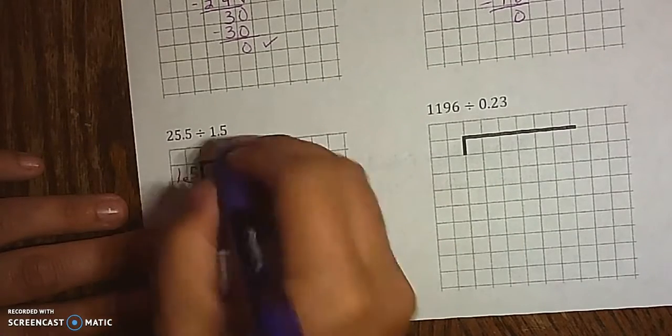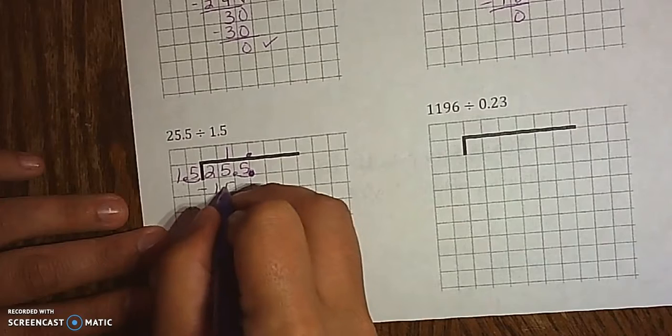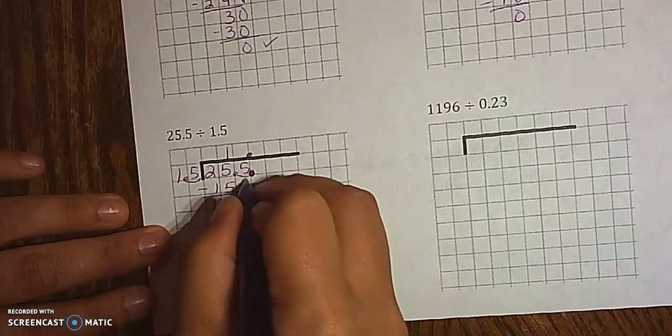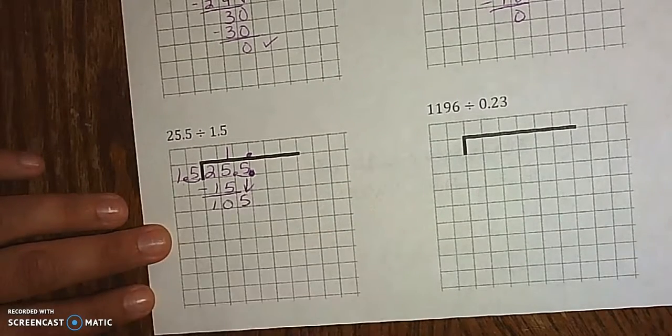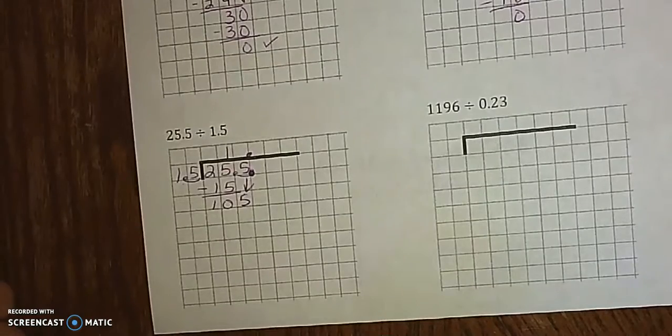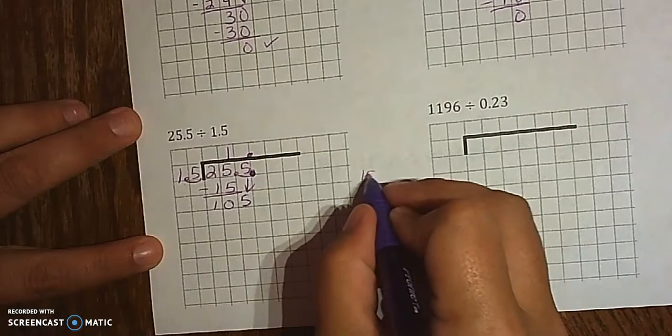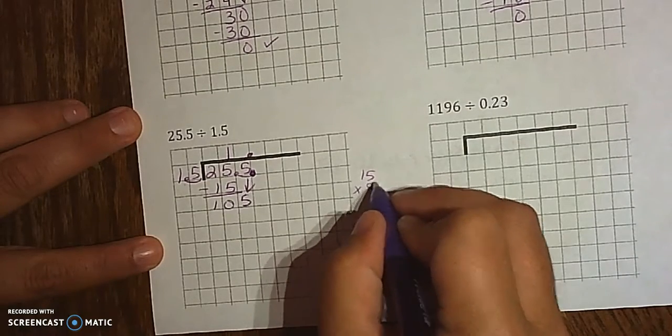15 goes into 25 once, with 10 left over. 15 goes into 105. Well, that's probably a lot. Let's go 15 times 8.